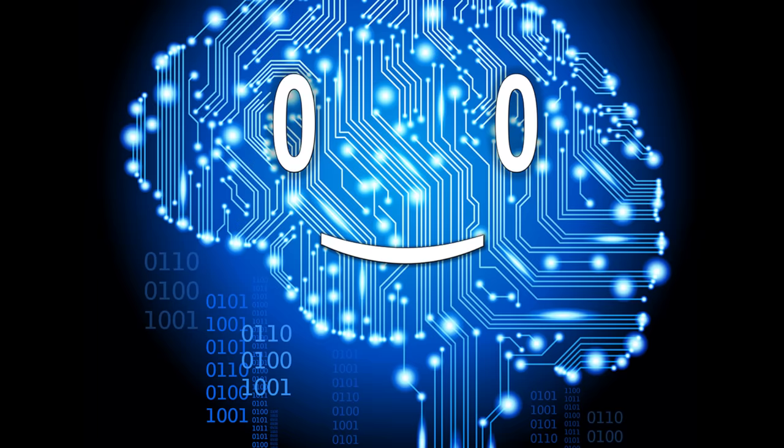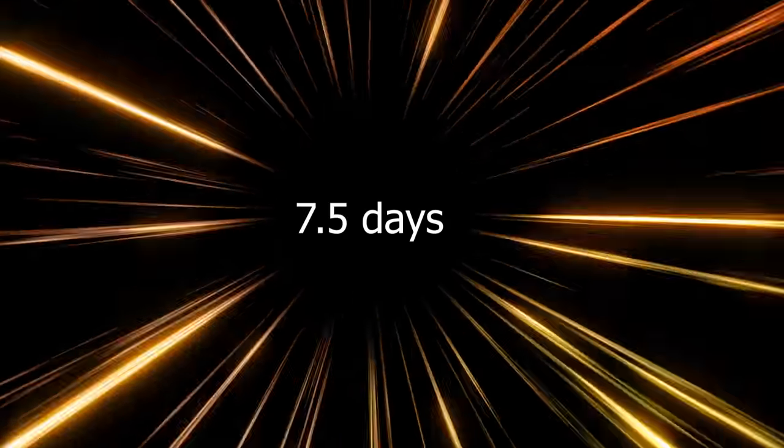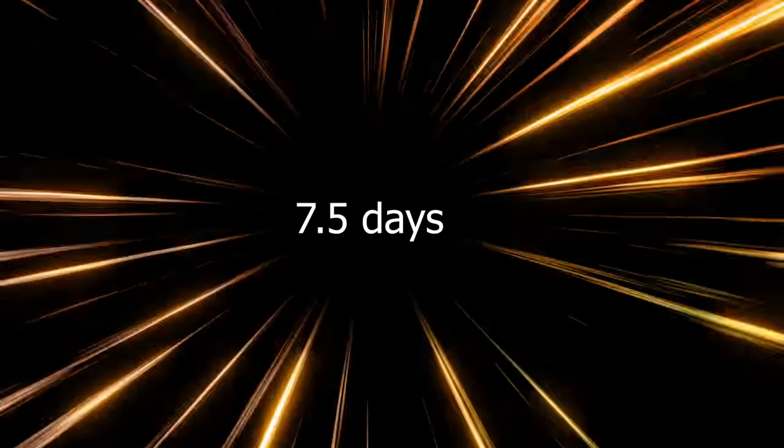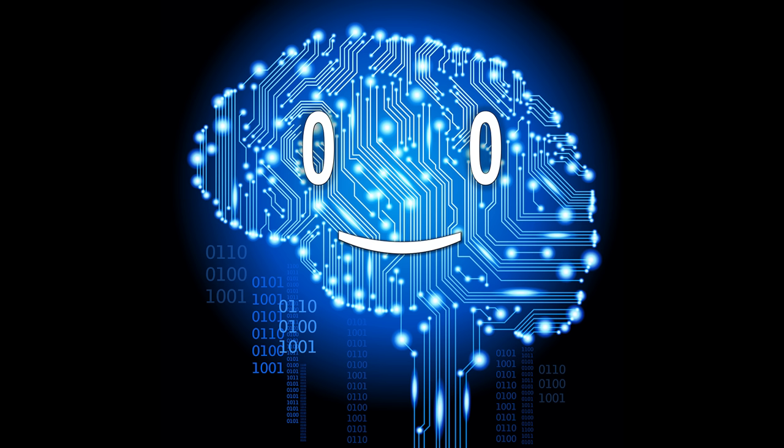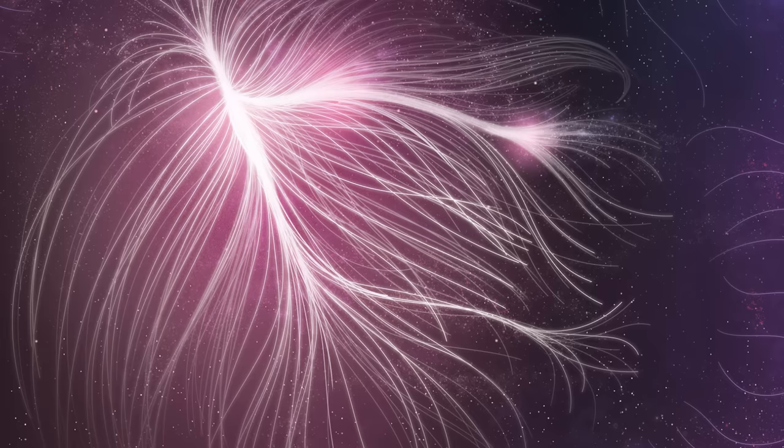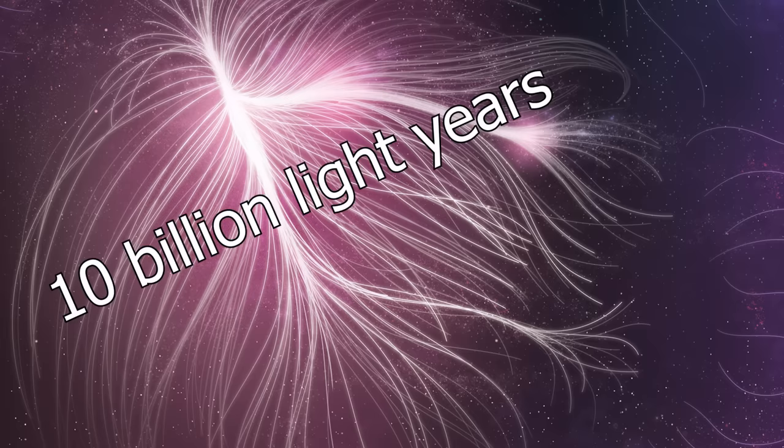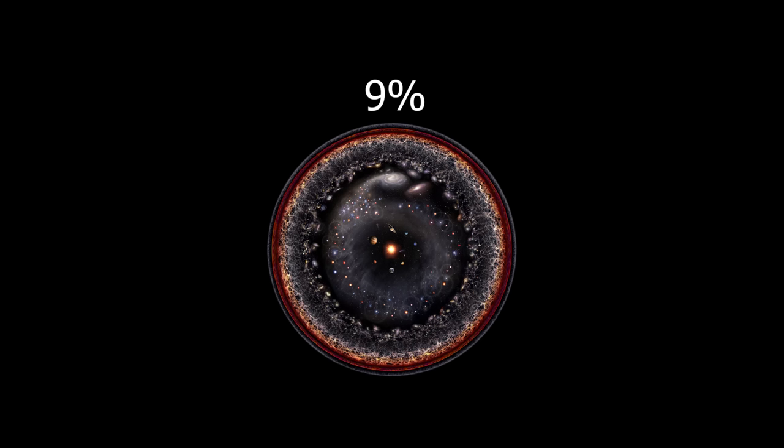Think about it, it would take light more than a week to get from one side to another if it could pass through a black hole, which it can't because black holes. But the single biggest object in our observable universe is the Hercules Corona Borealis Great Wall, a supercluster of galaxies that measures 10 billion light years in length, 9% of the entire observable universe.